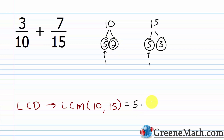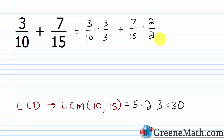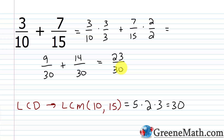The LCD is the LCM of 10 and 15, which is 5 × 2 × 3 = 30. Now rewrite each fraction with denominator 30: 3/10 × (3/3) = 9/30, and 7/15 × (2/2) = 14/30. We're multiplying by a complicated form of 1, so we're not changing the value. Then 9/30 + 14/30 = 23/30, which can't be simplified further.